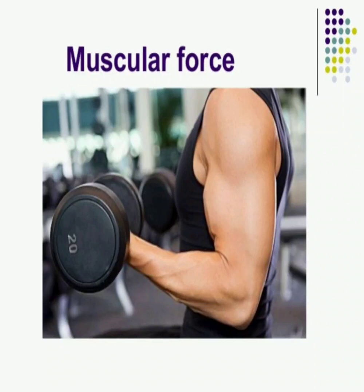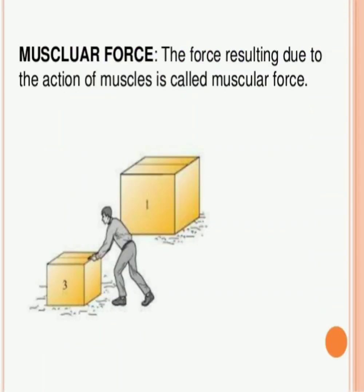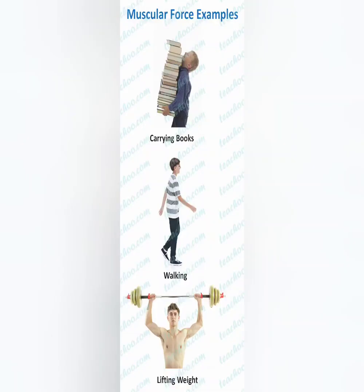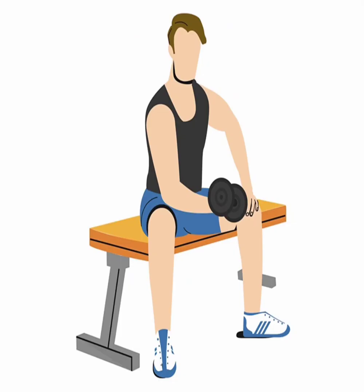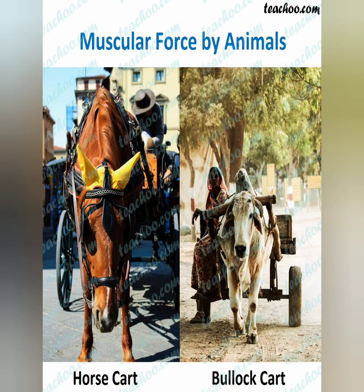Students, now we will discuss different types of forces. The first one is muscular force. The force applied by the muscles of human beings and animals to carry out physical activities is called muscular force. In our daily life we use muscular forces — like carrying water buckets, writing in notebooks, squeezing a lemon, and lifting heavy weights. Animals also use muscular forces: an elephant uses muscular force to carry logs, and bulls use muscular force to pull a cart.